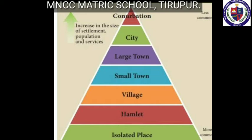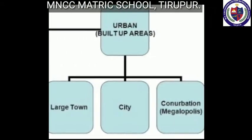A town is generally larger than a village but smaller than a city, with a population of less than one lakh. Cities are much larger than towns and have a greater number of economic functions; the population in cities is estimated to be more than one lakh - for example, Coimbatore.